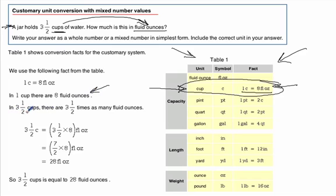So that means in three and a half cups, then there's three and a half times as many, right? So we just have to take the number of cups and multiply it by eight. Makes sense, doesn't it? If we have one cup is equal to eight, then two cups is equal to sixteen.